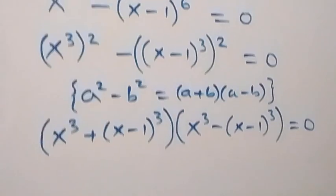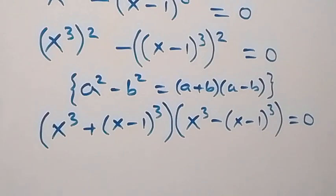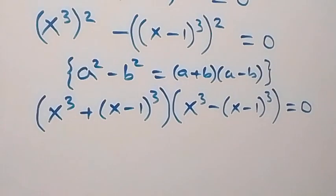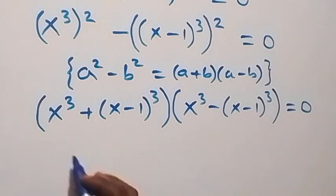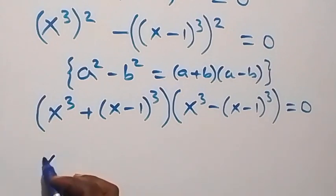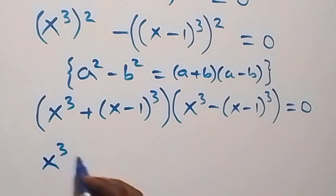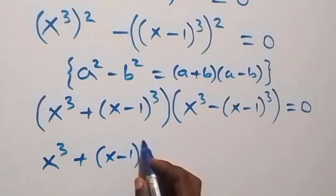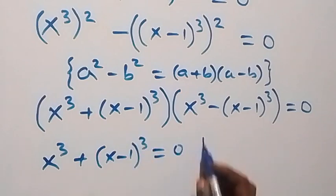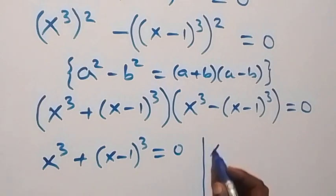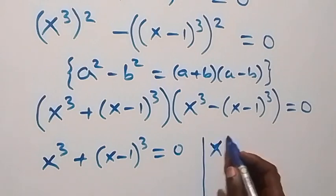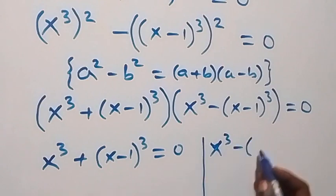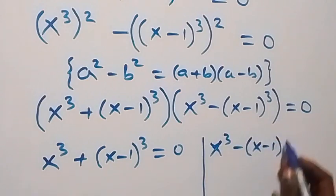You are watching Master T Math Class. If you like this video, please give me a thumbs up and subscribe to my channel. God bless you. Since the product of two numbers equals 0, it implies either x³ + (x−1)³ = 0, or x³ − (x−1)³ = 0.